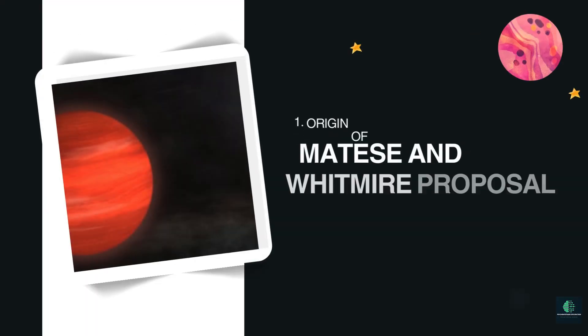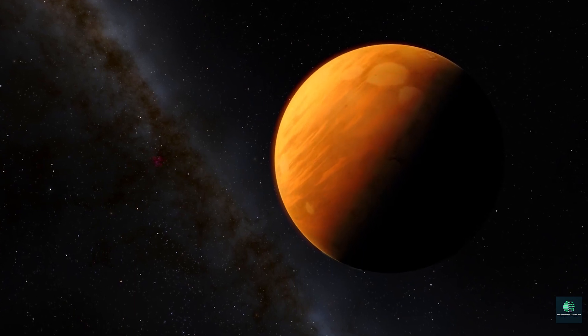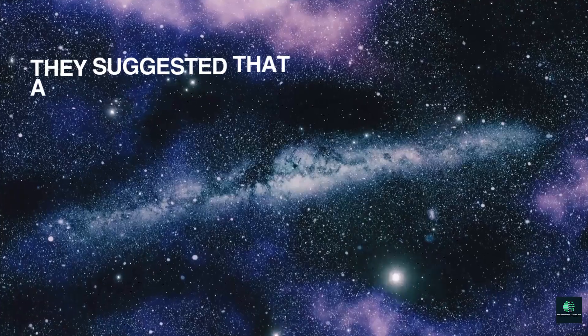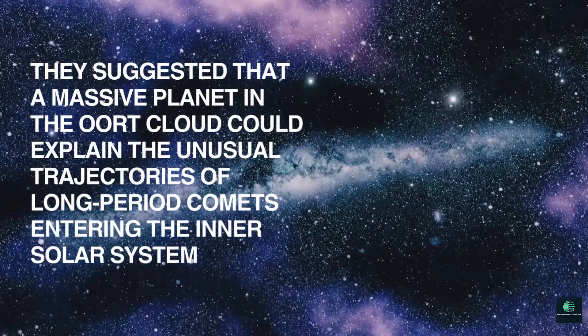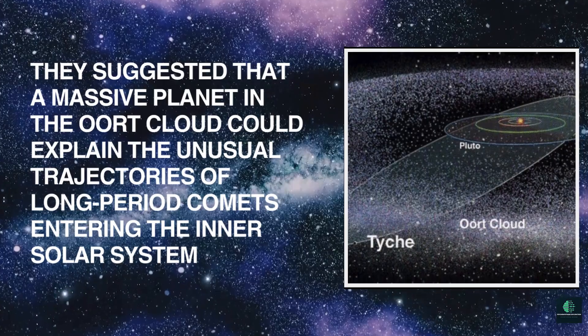Origin of the Hypothesis: Matizzi and Wittmeyer Proposal. Teich was proposed by astrophysicists John Matizzi and Daniel Wittmeyer in 1999. They suggested that a massive planet in the Oort cloud could explain the unusual trajectories of long-period comets entering the inner solar system.